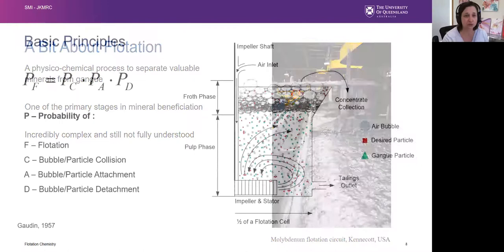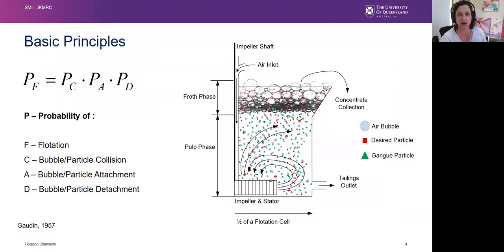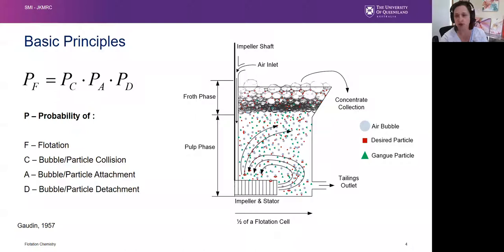For those who aren't aware, this is just a very basic schematic of how flotation works. You have a flotation cell that is agitated, you add air which ends up in the cell in the form of air bubbles. You have both the desired particles and the undesired particles, and the idea is for the desired particles to attach to the bubbles while the gangue particles remain behind. The desired particles float up into the flotation froth and become recovered as concentrate.